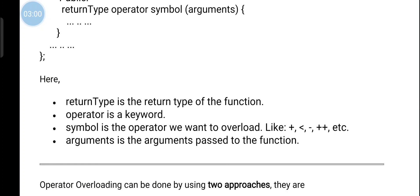The return type is the return type of the function. The keyword 'operator' is a required keyword. The symbol is the operator we want to overload — for example, less than, increment, or decrement operator symbols. Then we pass the argument list.